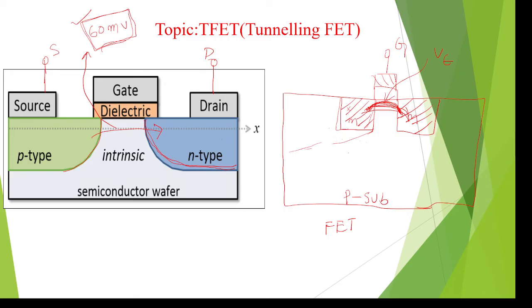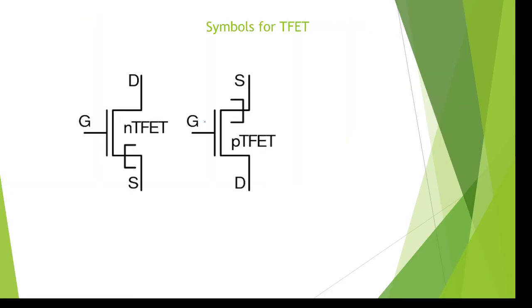The normal MOSFET diffusion region is like a square or rectangle shape, whereas the T-FET is like a tunnel shape. This reduces the distance between source and drain. Finally, T-FET still acts as a transistor. Here are the symbols for the tunneling field effect transistor.